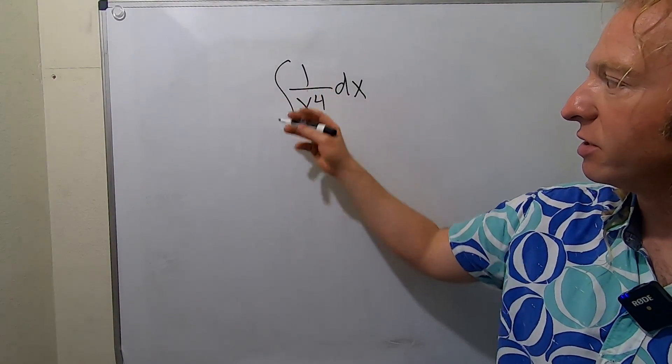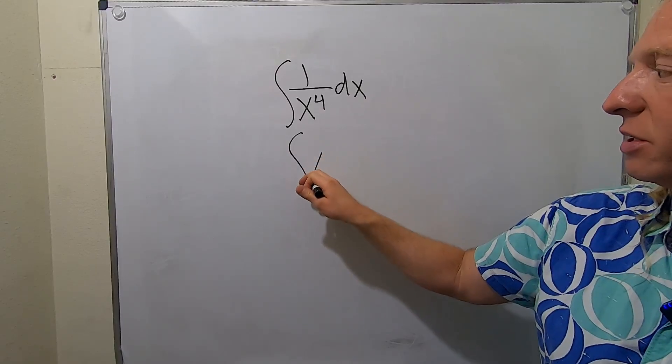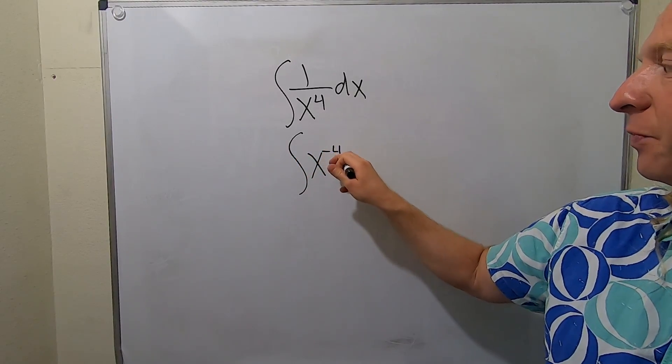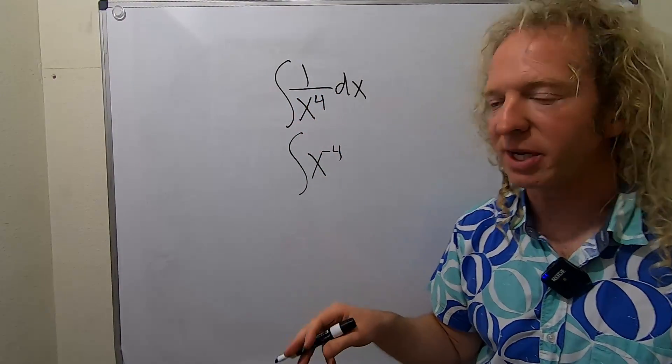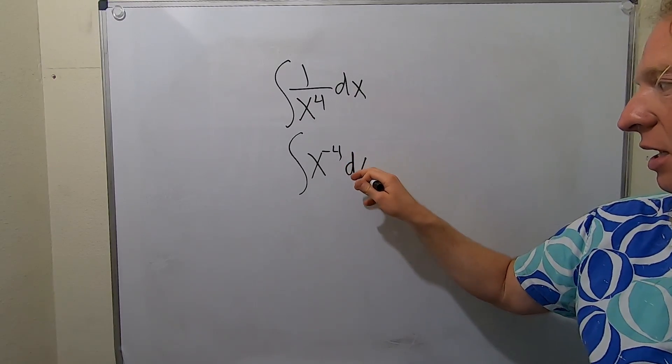So to do that, we'll bring this upstairs. So we'll write this as x to the negative 4. When you bring this up, the exponent becomes negative. And then we have our dx here.